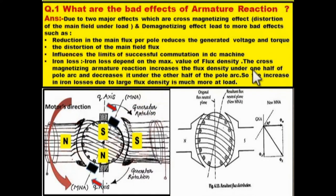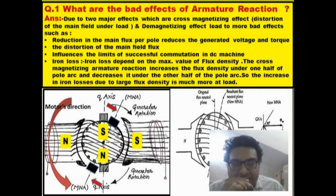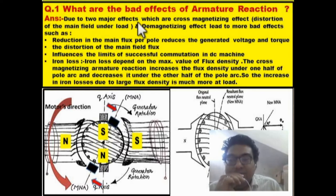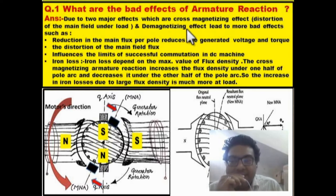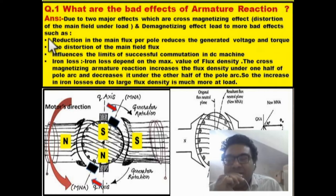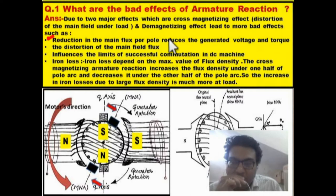Now let's see what bad effects result from these two major effects. Due to these two major effects — cross-magnetizing effect and demagnetizing effect — more bad effects are produced. The first bad effect is the reduction in the main flux per pole. This reduction in main field flux reduces the generator voltage and torque.